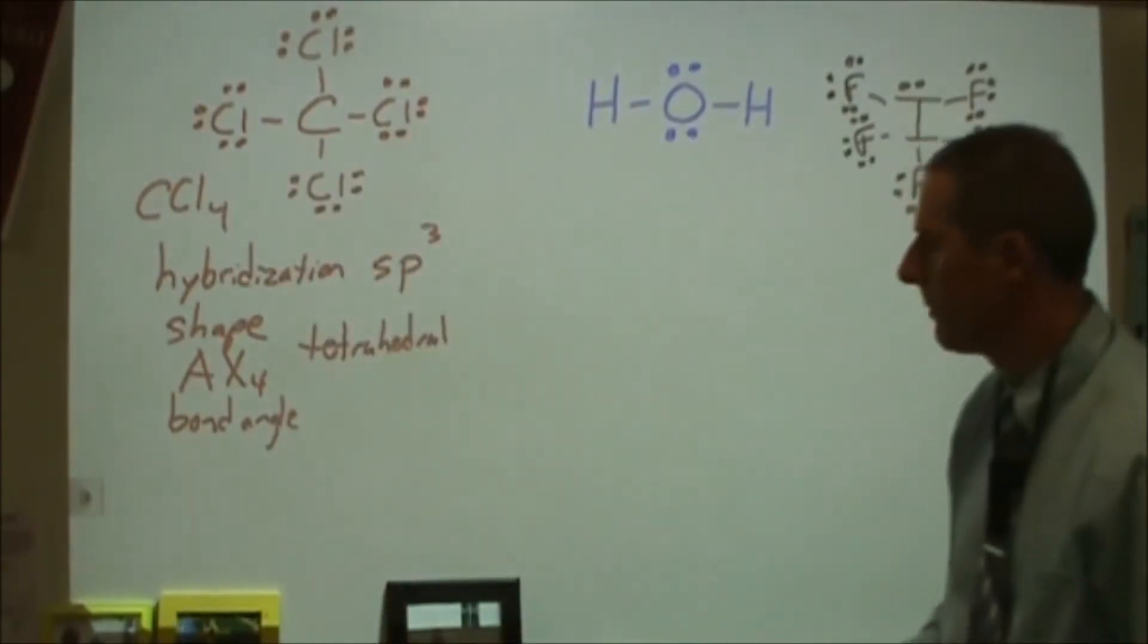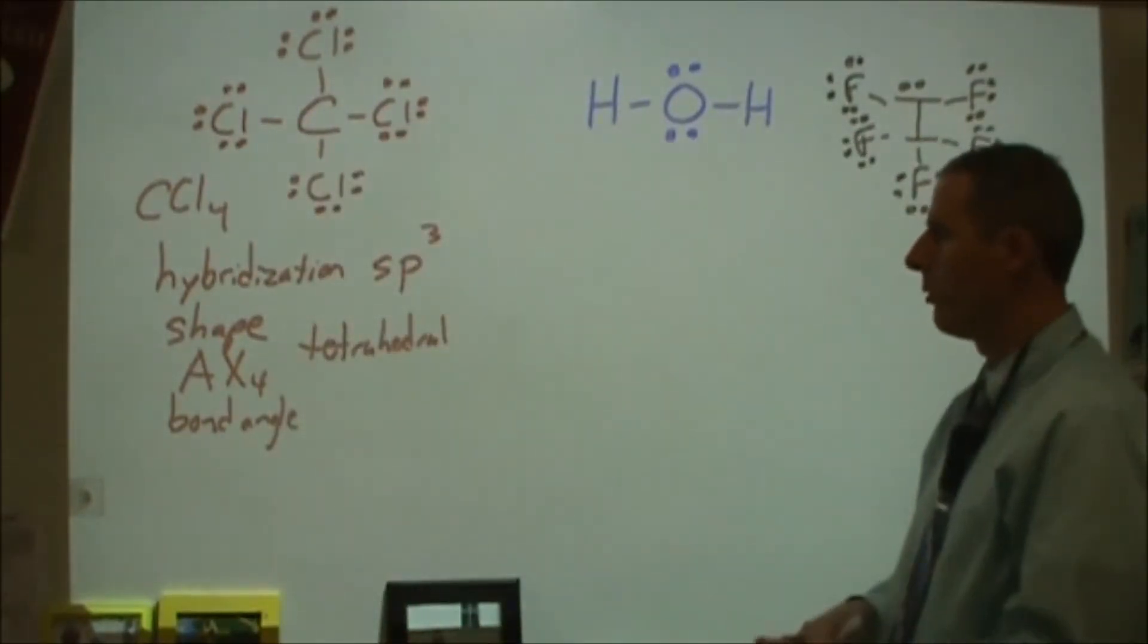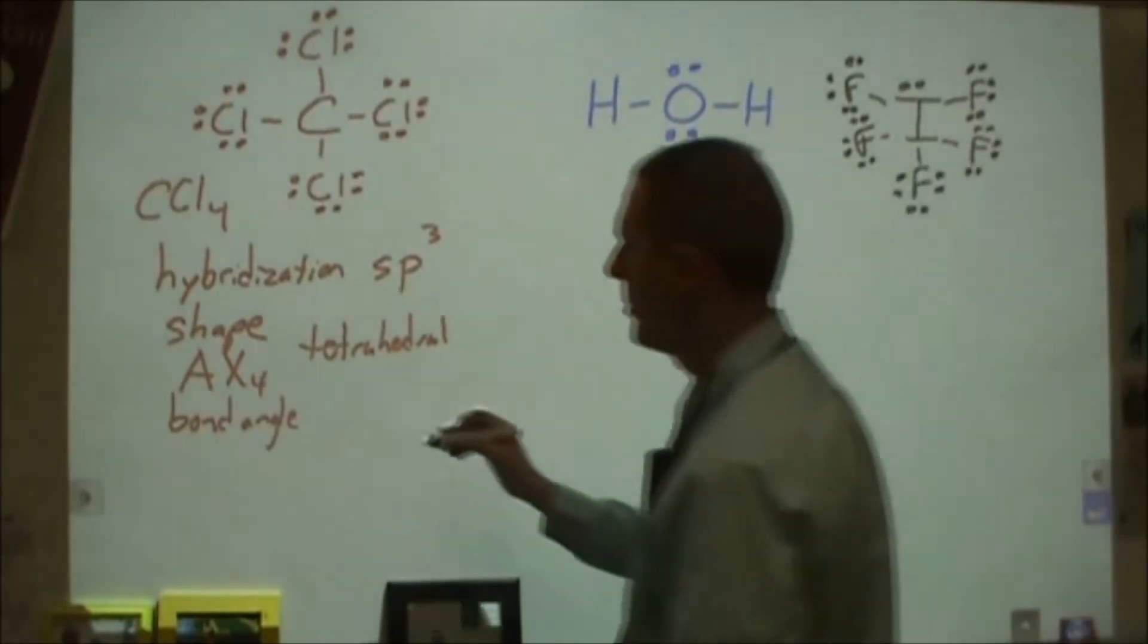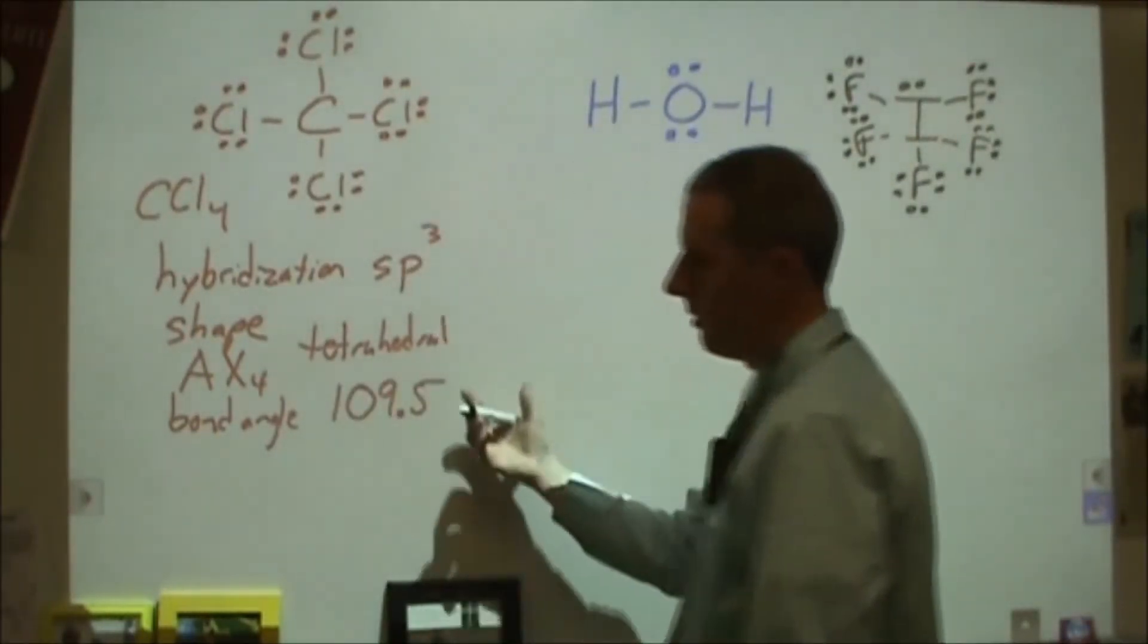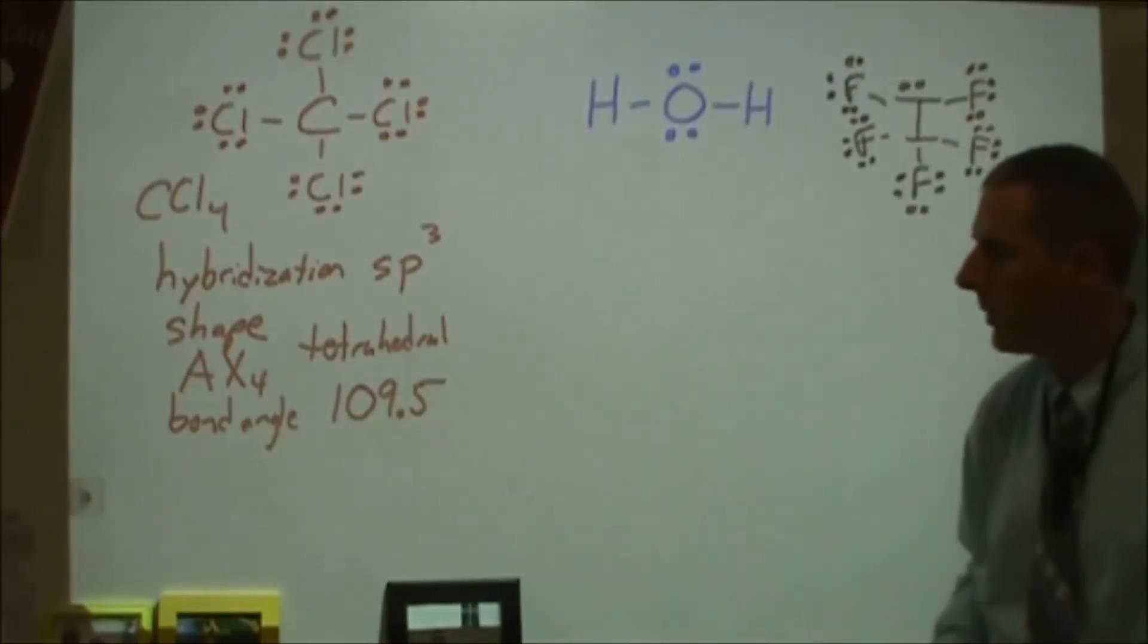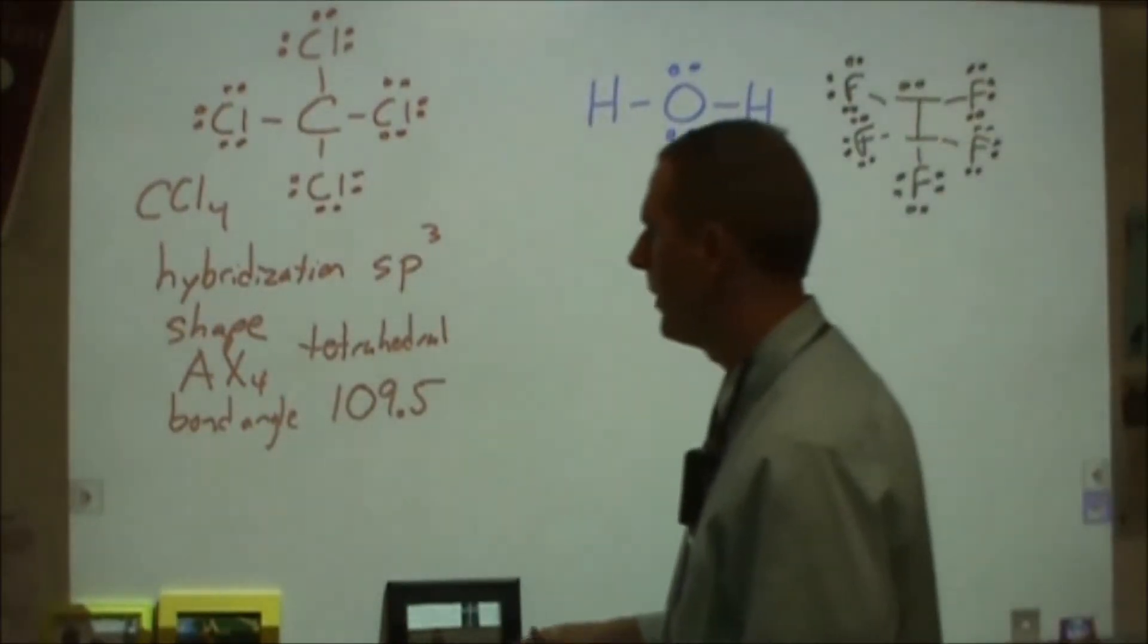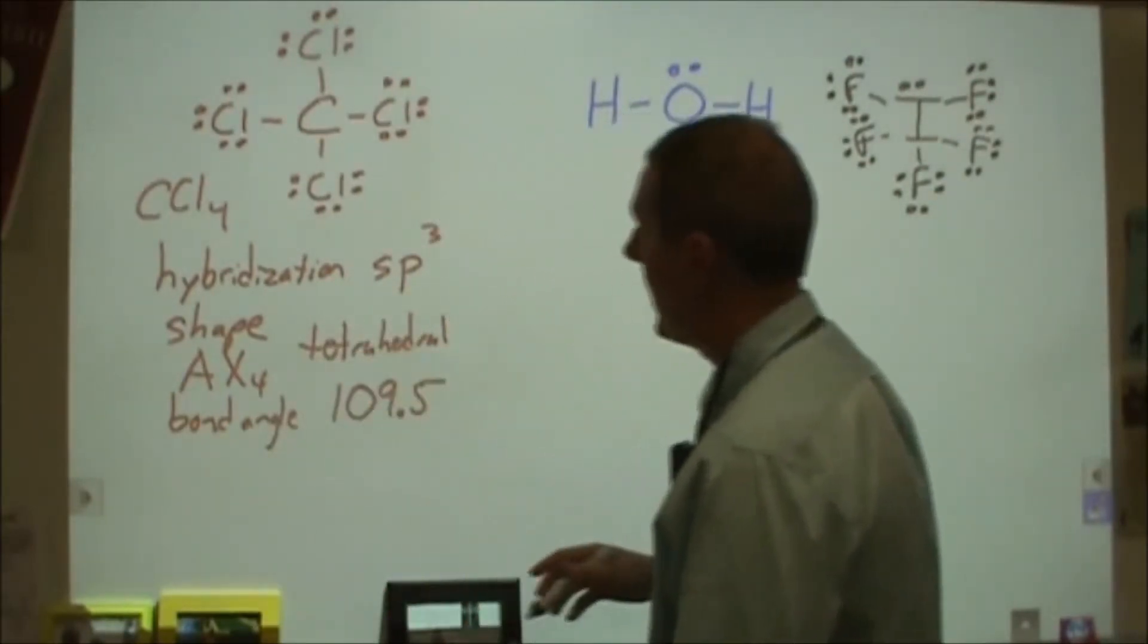Along with the shape will be the bond angle. So for anything in the tetrahedral geometry, whether it's tetrahedral, trigonal pyramidal, or bent, those are going to have bond angles that are that odd one, the 109.5 degrees. Although as you progress down, you'll get a little bit closer, 107, 105 range.